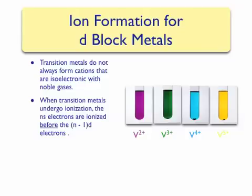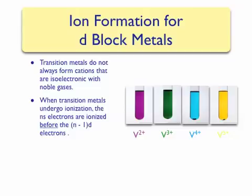When transition metals undergo ionization, their ns electrons are ionized before their (n−1)d electrons. This is contrary to what we saw with the Aufbau principle, where the (n−1)d electrons are filled after the ns electrons. So why are they ionized in the opposite order? One simple fact is that the ns electrons are on average further away from the nucleus. We can see this by examining the radial distribution functions for ns orbitals versus the (n−1)d orbitals, which shows that ns electrons are more likely to be further away from the nucleus, although they are lower in energy. This, combined with other factors, allows for the ns electrons to be ionized before the (n−1)d electrons.